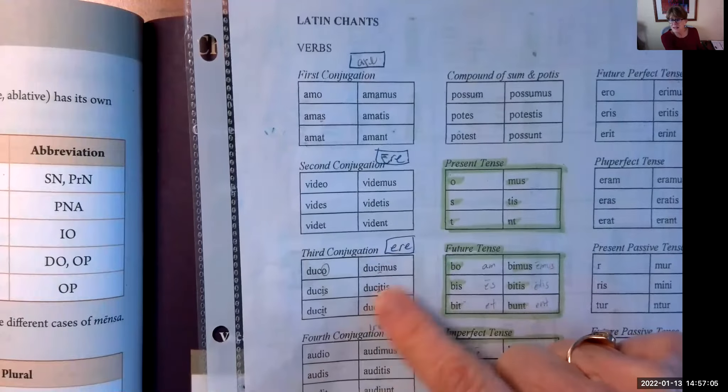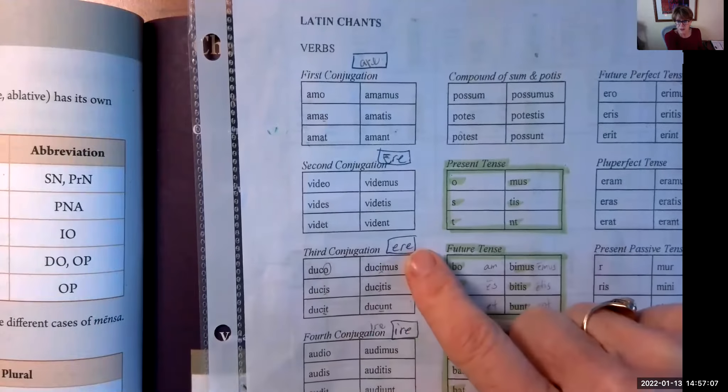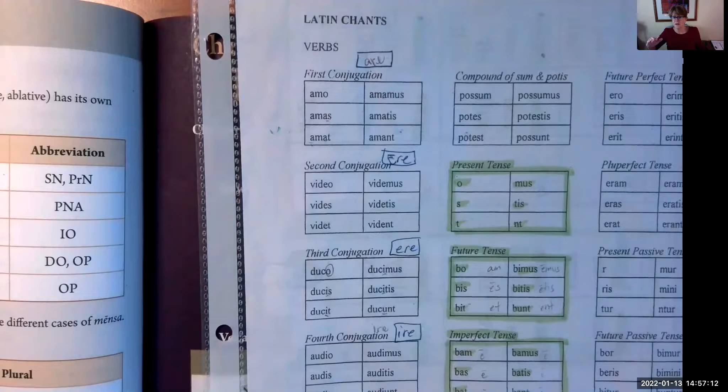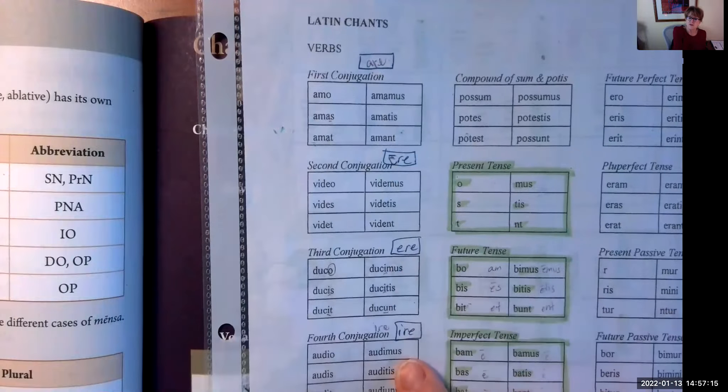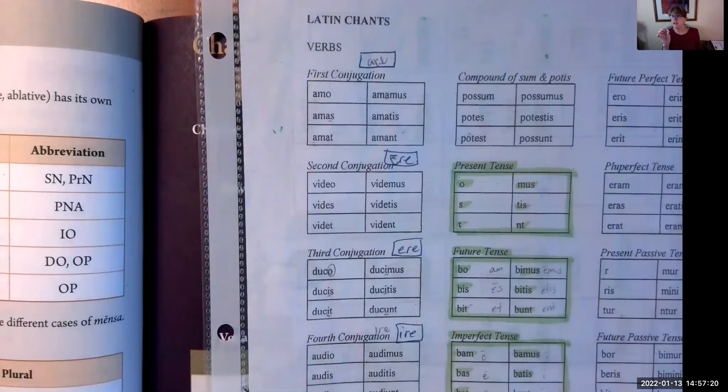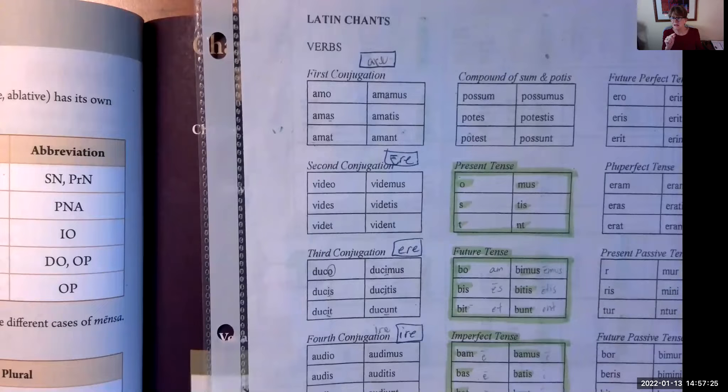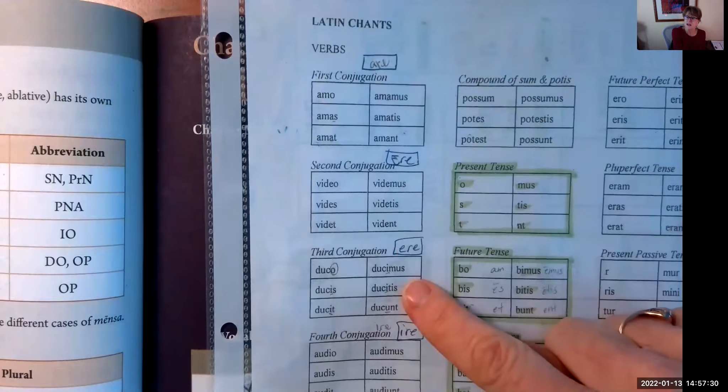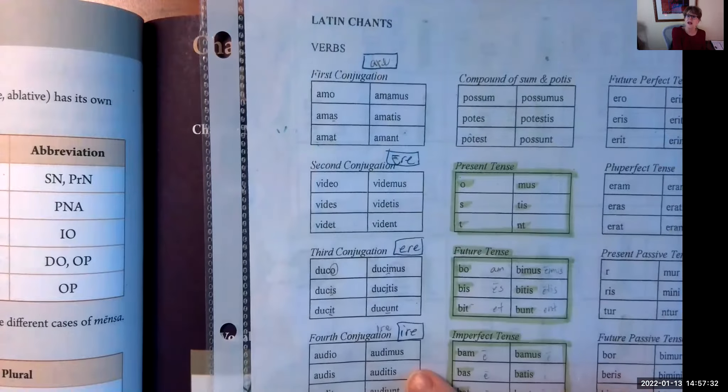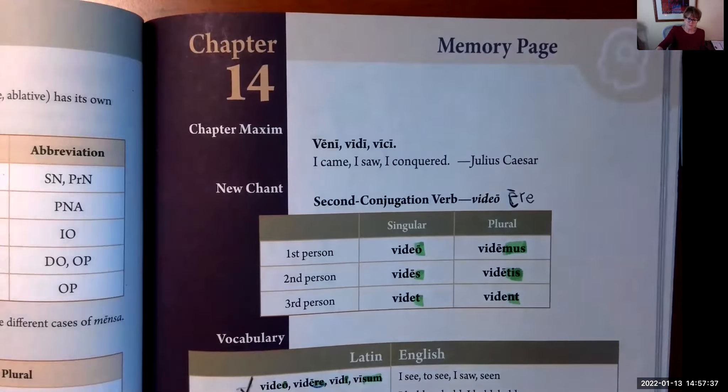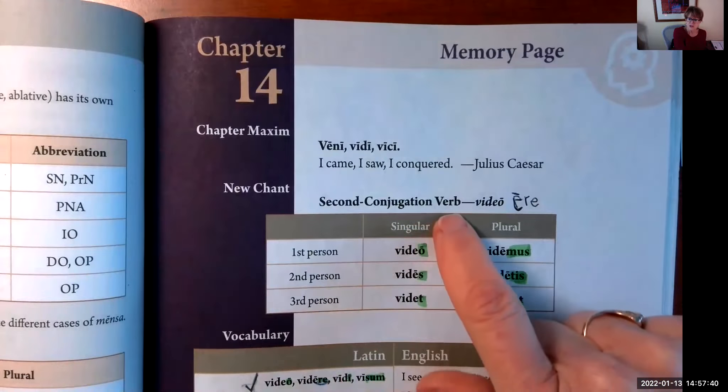The second kind of verb we will learn in this book is a second conjugation. It ends in the infinitive, the second principal part, in a long E-R-E. You must say long E-R-E because this third kind, this irregular verb, is also an E-R-E. This is a short E-R-E, and then the fourth kind is I-R-E. So verbs are categorized by their endings in the infinitive: A-R-E, long E-R-E, short E-R-E, and I-R-E.